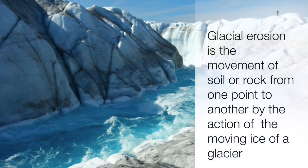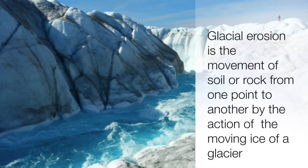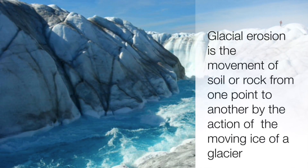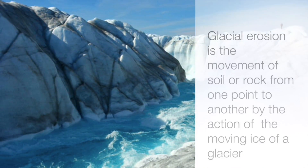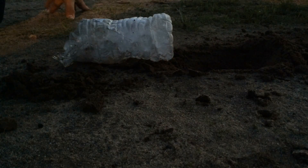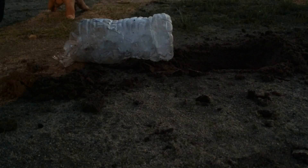Glacial erosion is the movement of soil or rock from one point to another by the action of the moving ice of a glacier. There are three types of glacial erosion: plucking, abrasion, and freeze thaw.